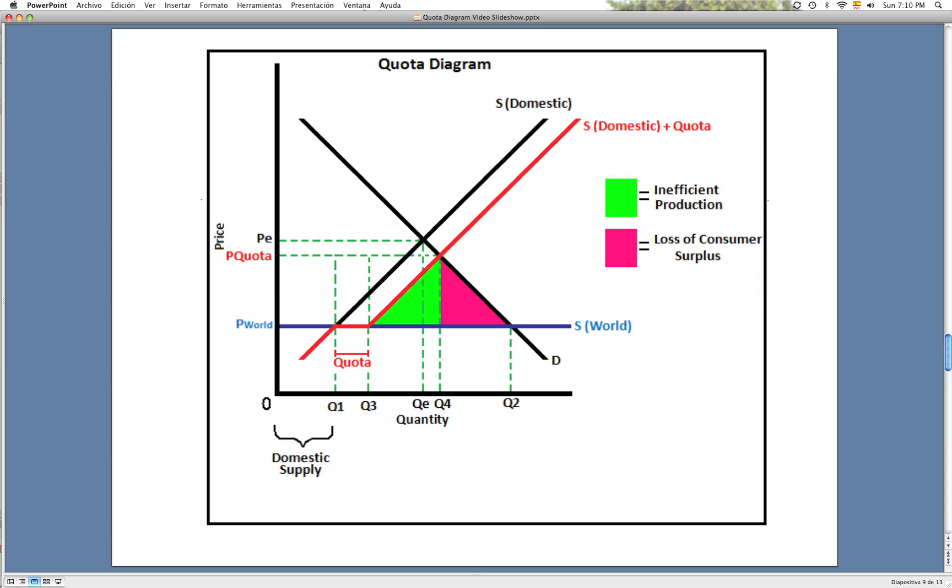The inefficient production in the green area is the quantity being produced by relatively inefficient domestic producers, as opposed to more efficient foreign producers. Consequently, it represents the inefficiency of domestic producers and creates a deadweight loss of welfare.